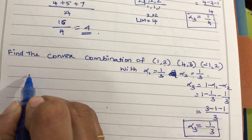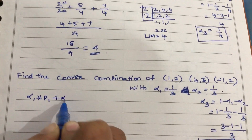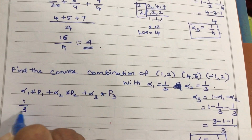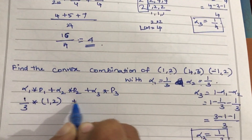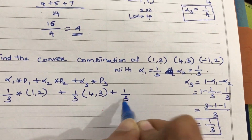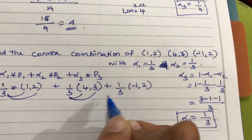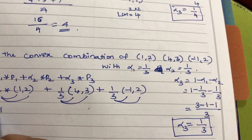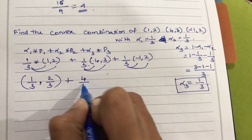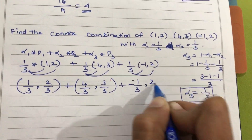Using the same formula — alpha 1 into P1 plus alpha 2 into P2 plus alpha 3 into P3 — you will have: 1/3 into (1/2) plus 1/3 into (4/3) plus 1/3 into (-1, 2). Multiplying through: 1/3 gives (1/3, 2/3) plus (4/3, 3/3) plus (-1/3, 2/3).